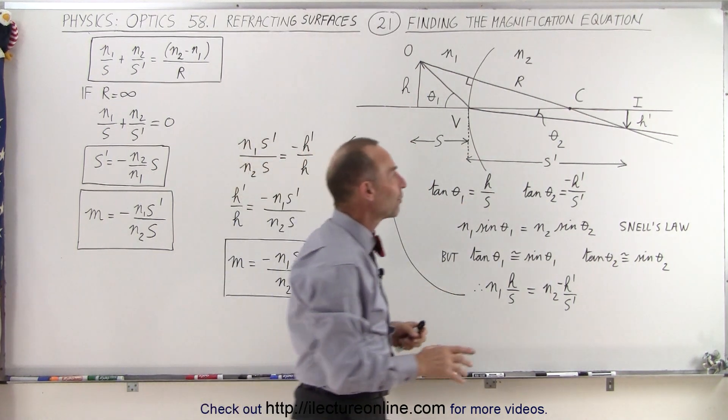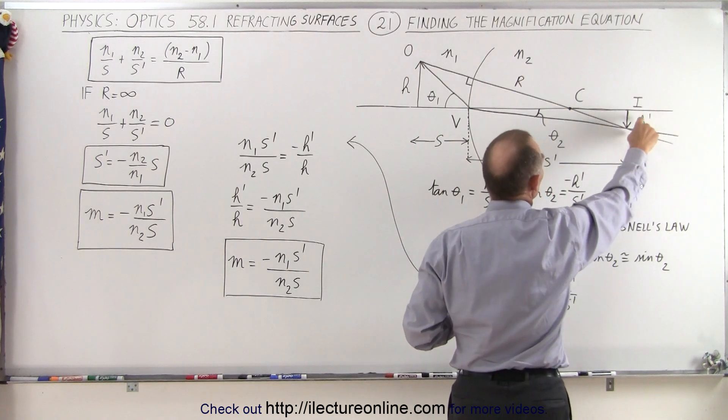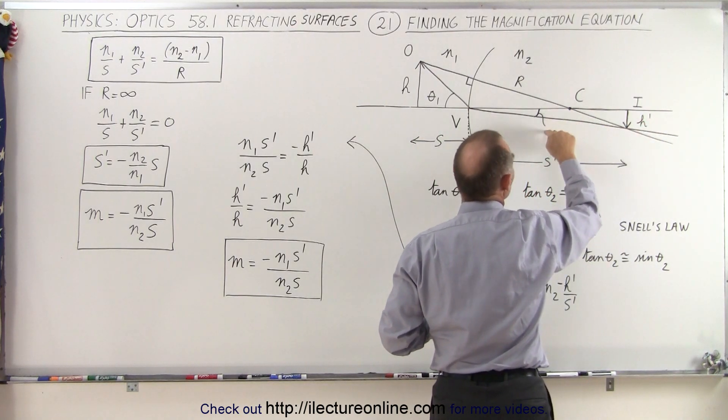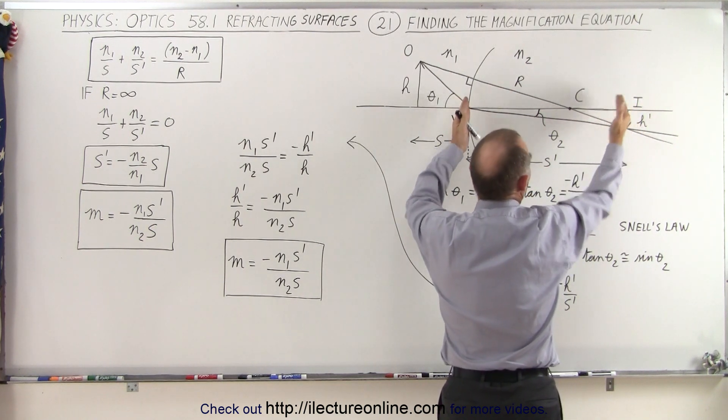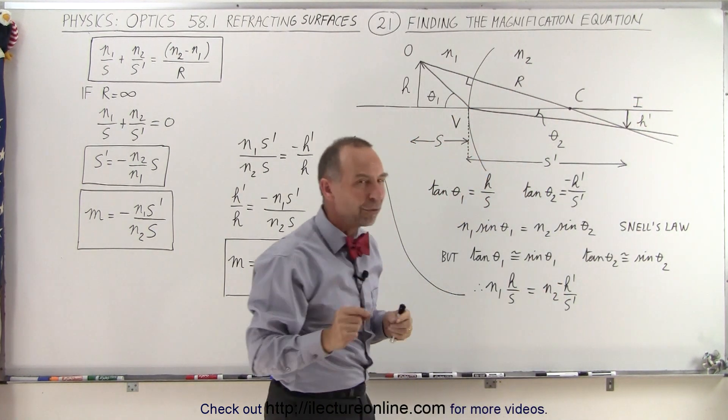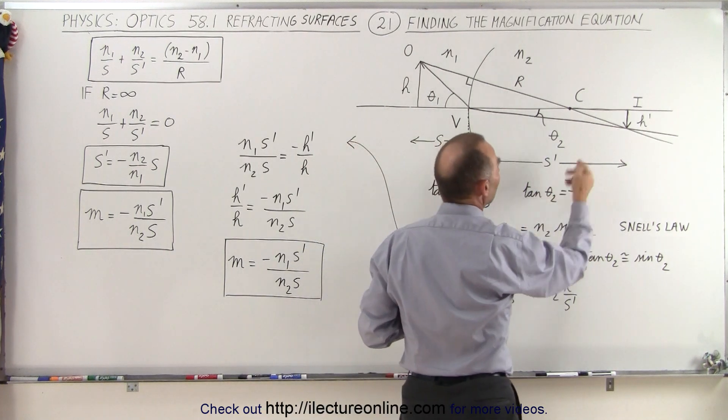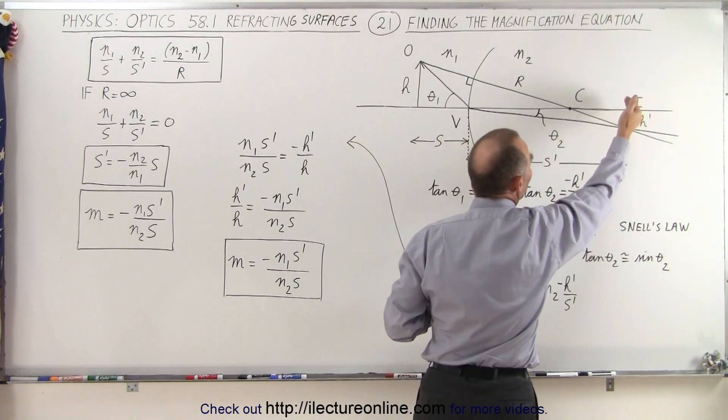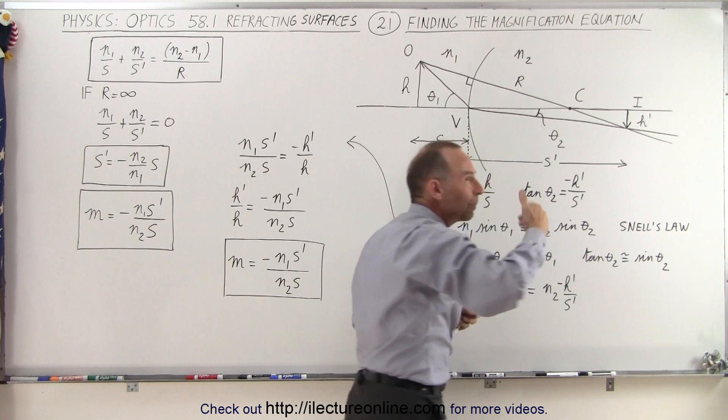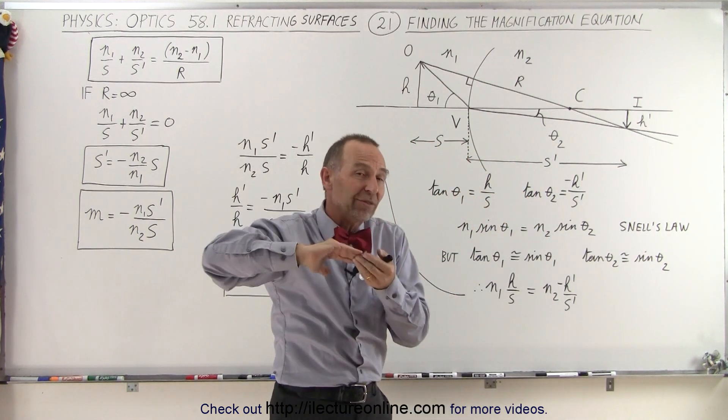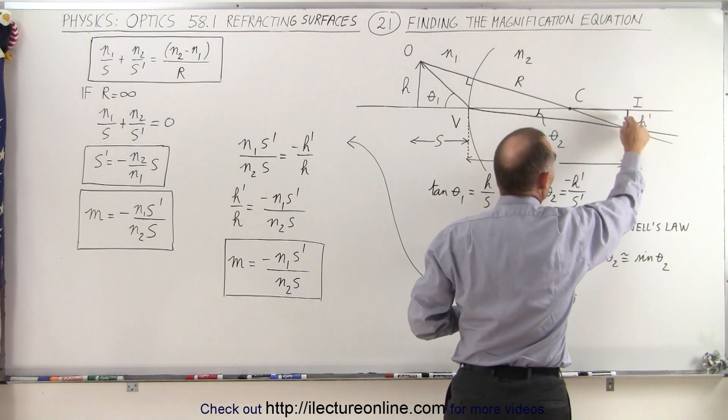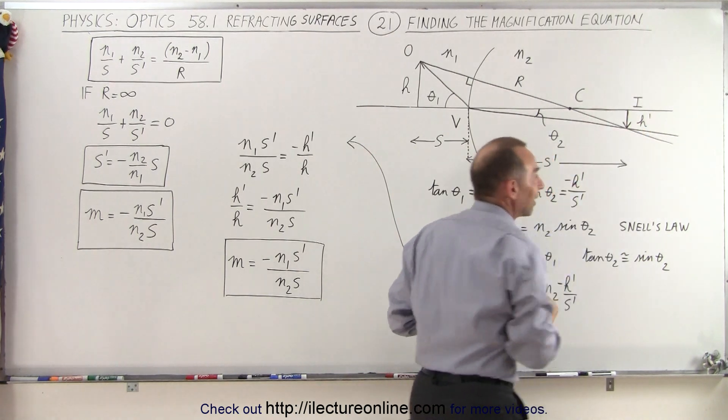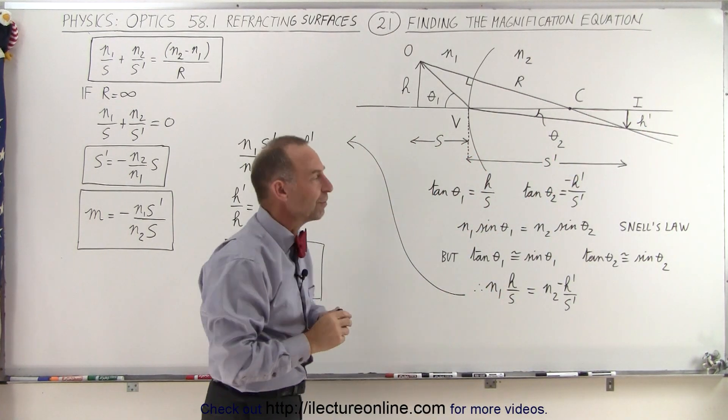We can do the same over here for the image height. So we can say that the tangent of theta 2 is going to be the height here, H prime, over the distance, which is S prime, the image distance. However, we're going to put a negative in front of that, because the image is upside down, and when we think about magnification, we have to account for the negative sign that indicates the image is upside down. So in this case, we need to add the negative sign, since we're going to try to derive the magnification.